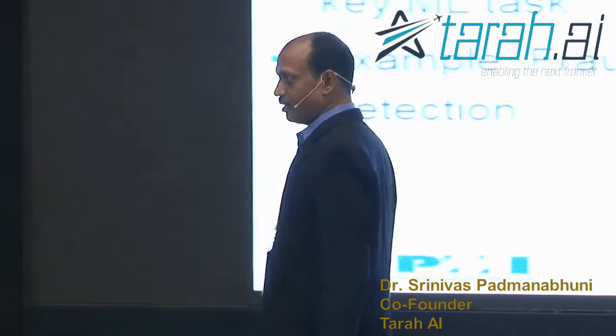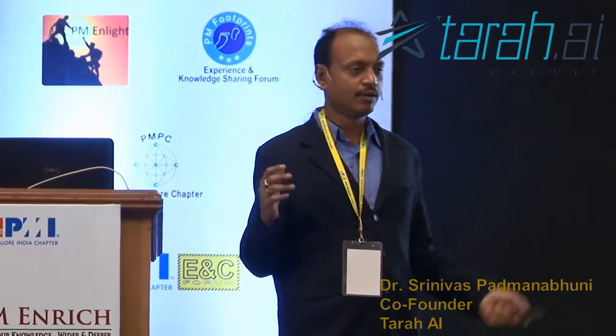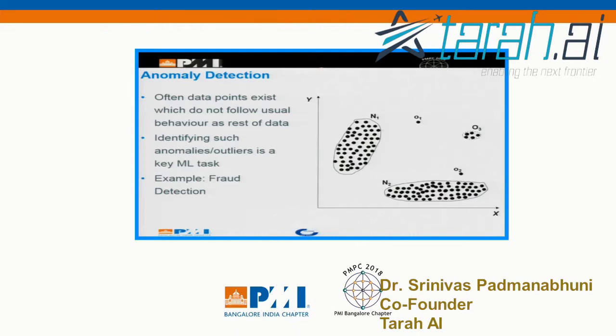This is sometimes supervised, but this is a very classic machine learning problem. The idea is there is something known as normal behavior, but then some of the data points stand out. These are called anomalies or outliers.